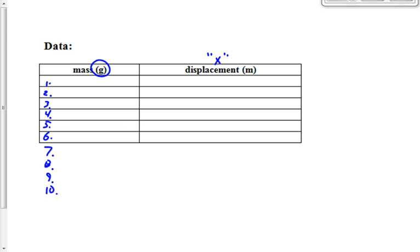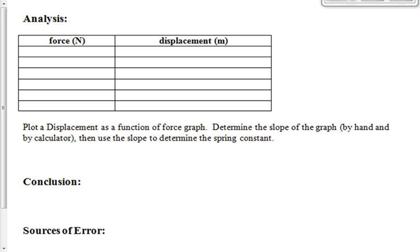Your analysis table. Remember, we don't want displacement in mass, we want displacement in force, so let's calculate the force. That's going to be grams to newtons. We're going to divide by 1,000 to get kilograms, and then we're going to multiply it by 9.81 to get newtons. Make sure that force is in newtons, make sure the displacement's in meters, and then we're going to plot that graph of displacement versus force.